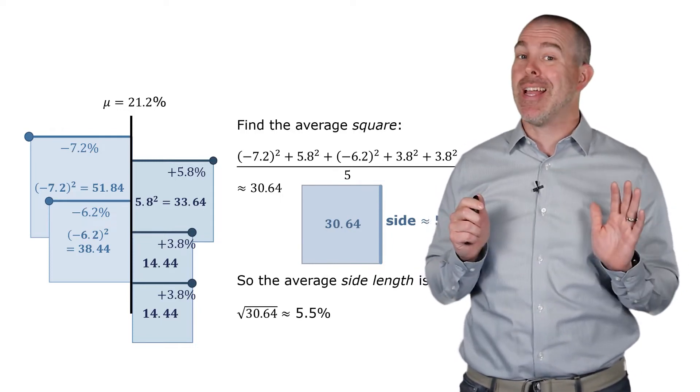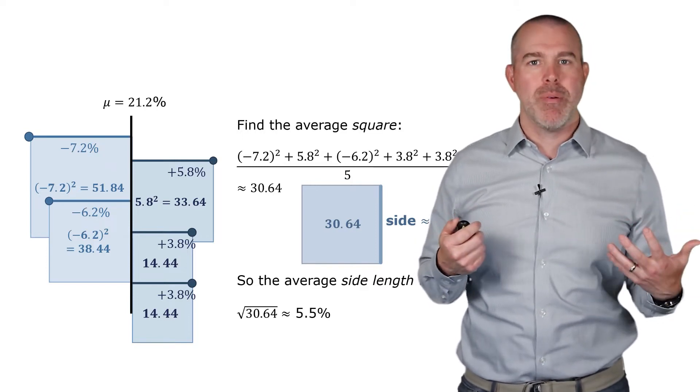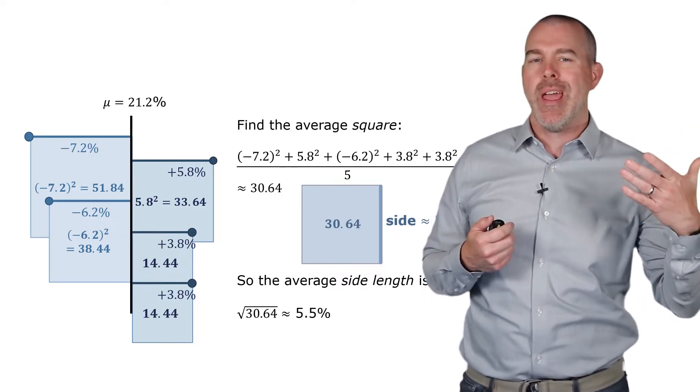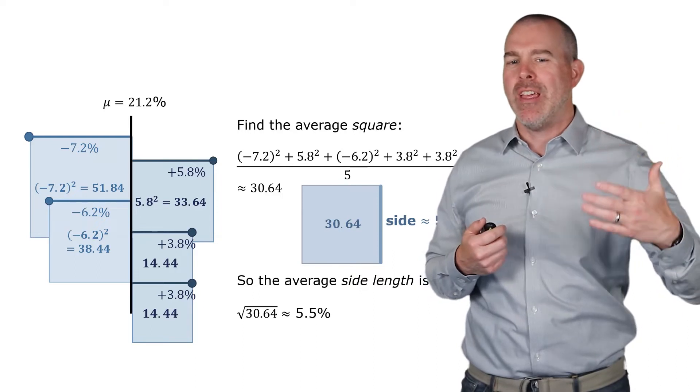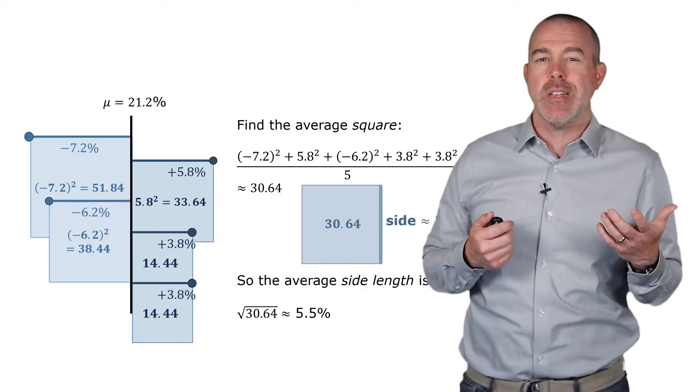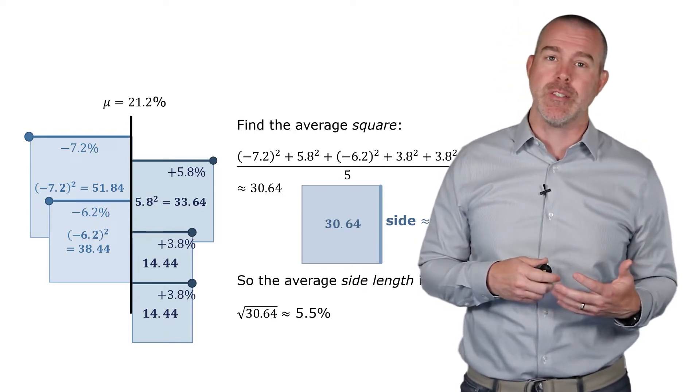Now this seems like a lot of work to get a way to describe how far that typical one is from the mean. But the benefit of squaring and square root, if you've ever taken a calculus class, you're finding rates of change derivatives. It's easier to do that with squares than it is with absolute values. So that's kind of my subtle reasoning behind why we do this.